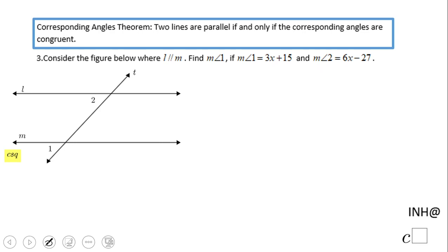Welcome or welcome back to C Square. In this problem we will find the measure of angle 1. Angles 1 and 2 are given in this format as expressions of a variable.